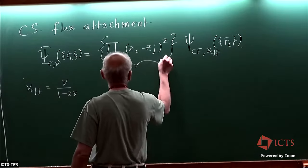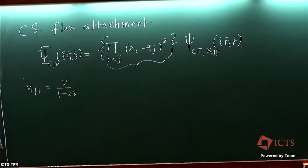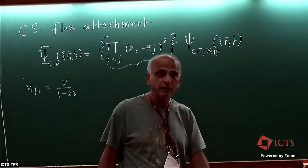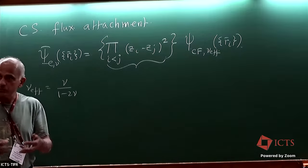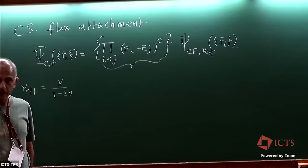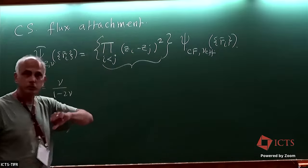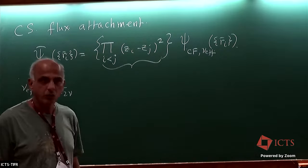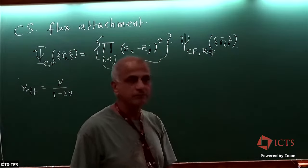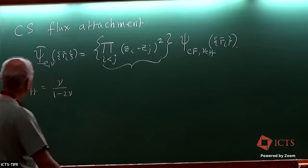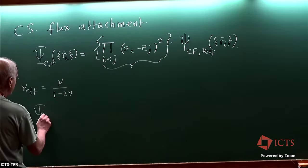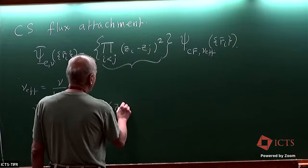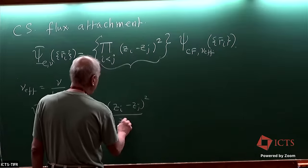The Laughlin-Jastrow factor is a very non-perturbative factor: it changes the phase when electrons go around each other — that's the flux attachment part — but it also builds in a vortex, so the wave function goes to zero smoothly and analytically as two particles approach each other, with extra powers of (z_i − z_j). We now adopt a more modest goal: let's just attach the phase and worry about the amplitude later.